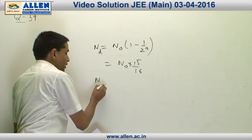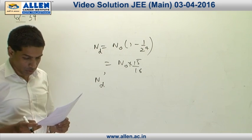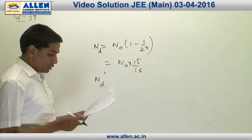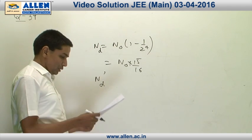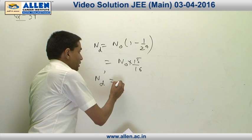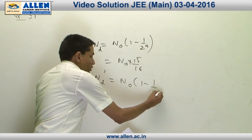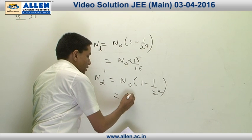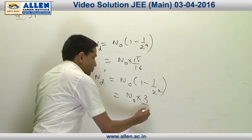The number of decayed members in the case of sample B, which has a half-life of 40 minutes - 40 minutes means there will be 2 half-lives in 80 minutes, so number of decayed members will be N0 into 1 minus 1 by 2 square, which happens to be N0 into 3 by 4.